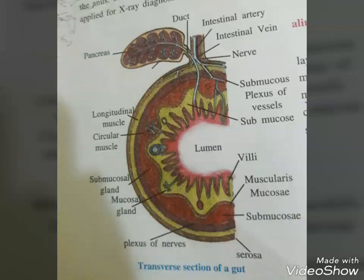Serosa is the outermost layer and is made up of a thin layer of mesothelium with some connective tissue. Muscularis is formed by smooth muscle, usually arranged into an inner circular and outer longitudinal layer. An oblique muscular layer may be present in some regions. The submucosal layer is formed by loose connective tissue containing nerves, blood, and lymph vessels. In the duodenum, glands are also present in the submucosa.